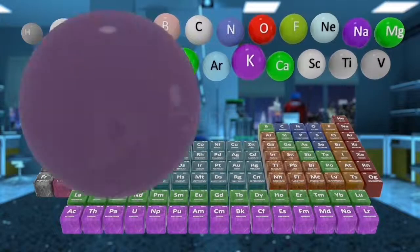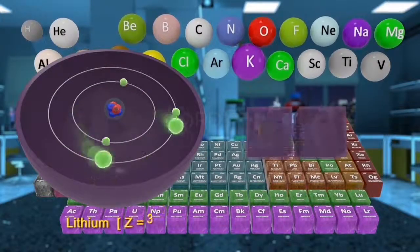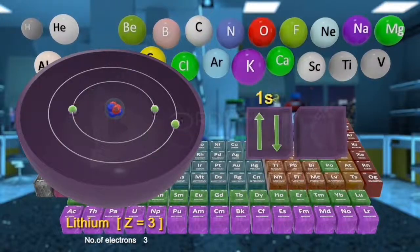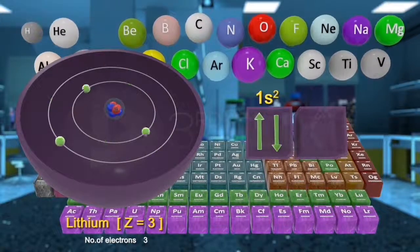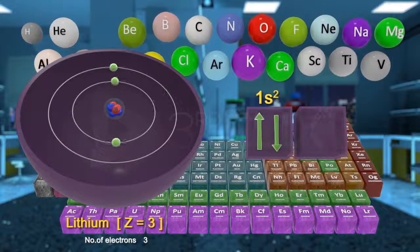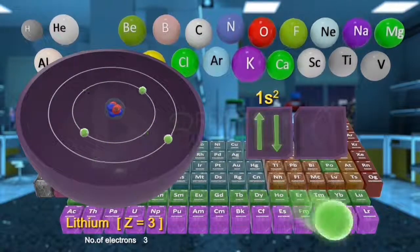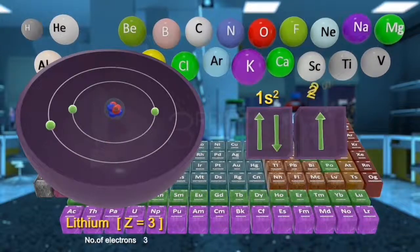Lithium has three electrons. Two electrons will be filled in one s-orbital, while the remaining one electron goes to the orbital of next higher energy, that is, 2s.